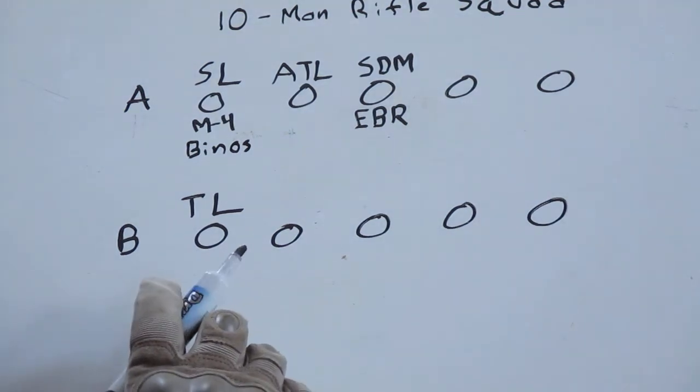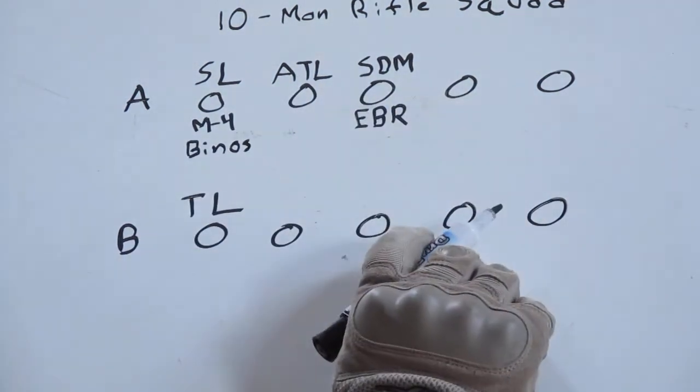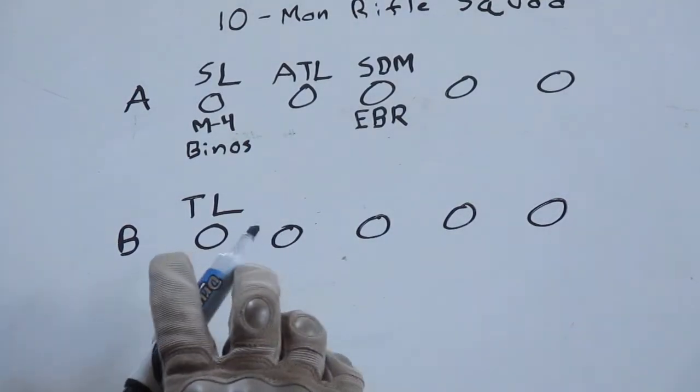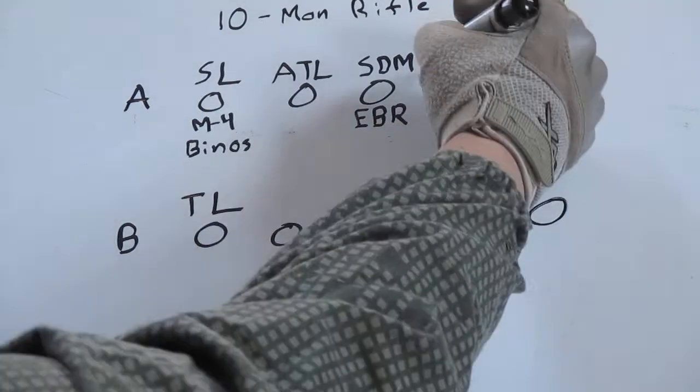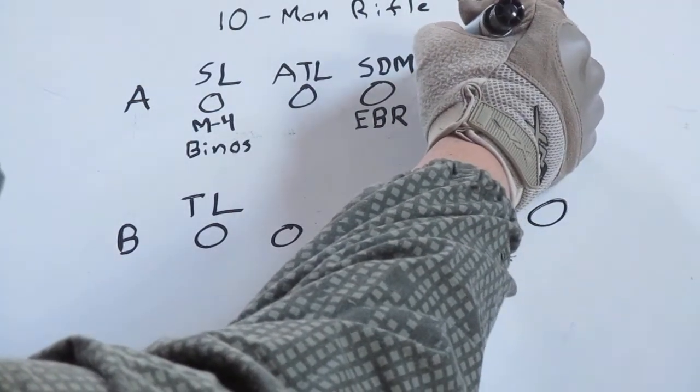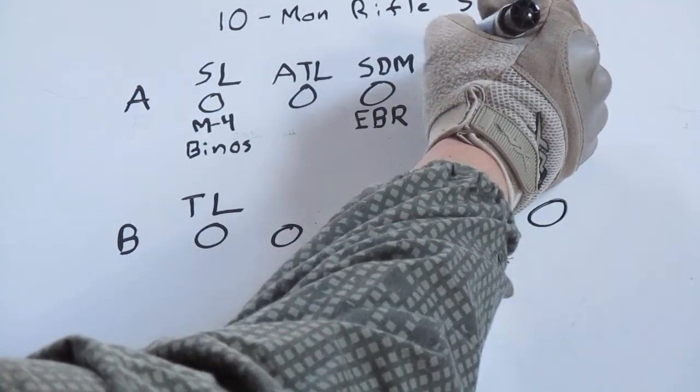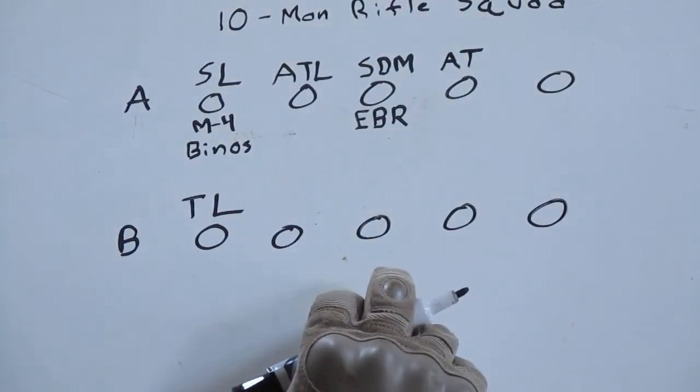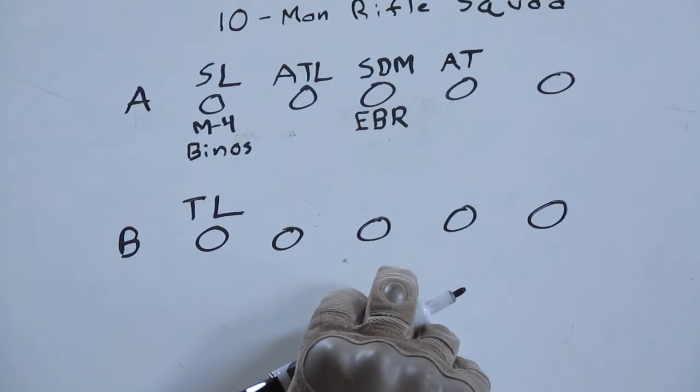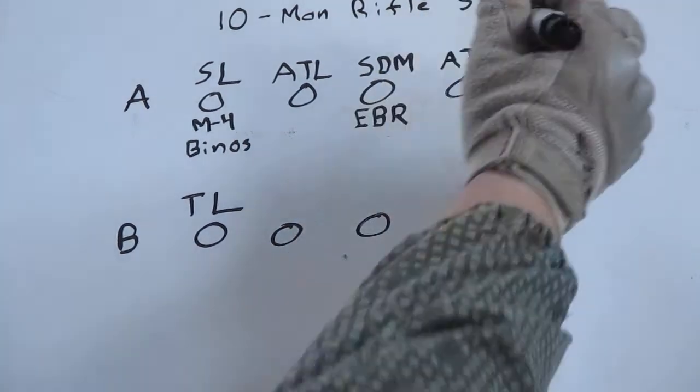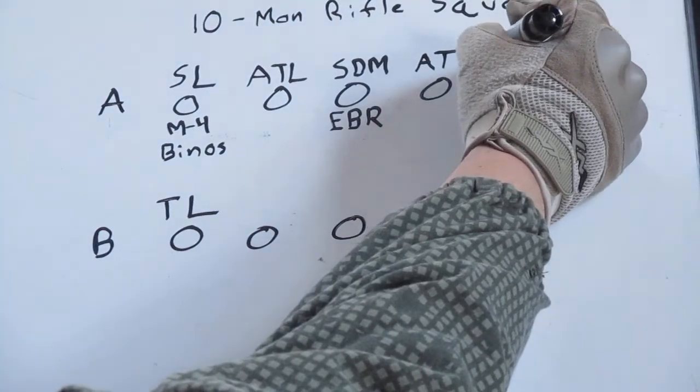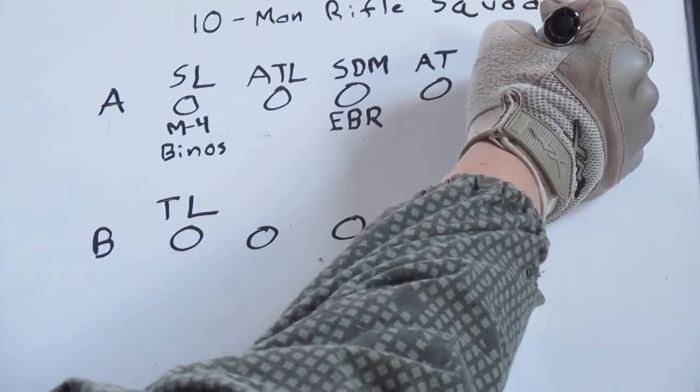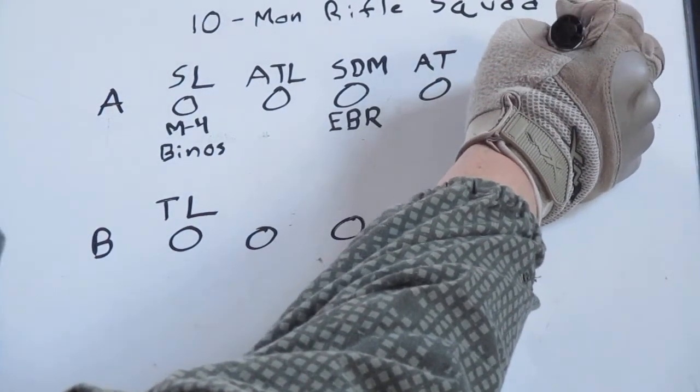To go along with his duty position he should have a pair of binos to assist him. Now the other duty positions we'll fill out right away in your alpha team - you'll have an anti-tank gunner or anti-tank soldier. You should also have a person who will be designated as your squad automatic rifleman on that team.